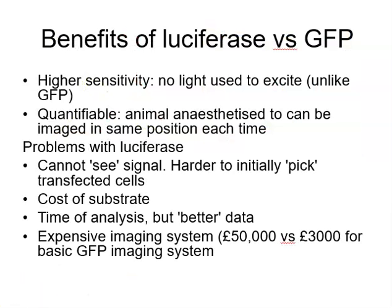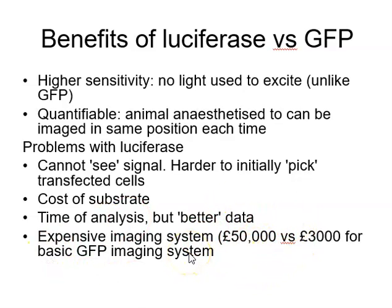To summarise the benefits of luciferase over GFP for live animal imaging: high sensitivity with no background light input means a better signal-to-noise ratio; it is directly quantifiable because animals are anaesthetised and imaged in the same position each time. The downsides are that you cannot see the signal with the naked eye, making it harder to initially identify successfully transfected cells; analysis takes longer; and the equipment is far more expensive — from £50,000 upwards compared to around £3,000 for a basic GFP system.